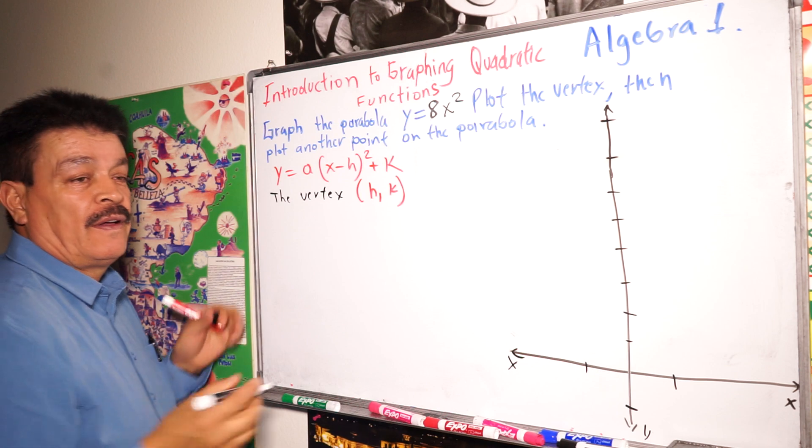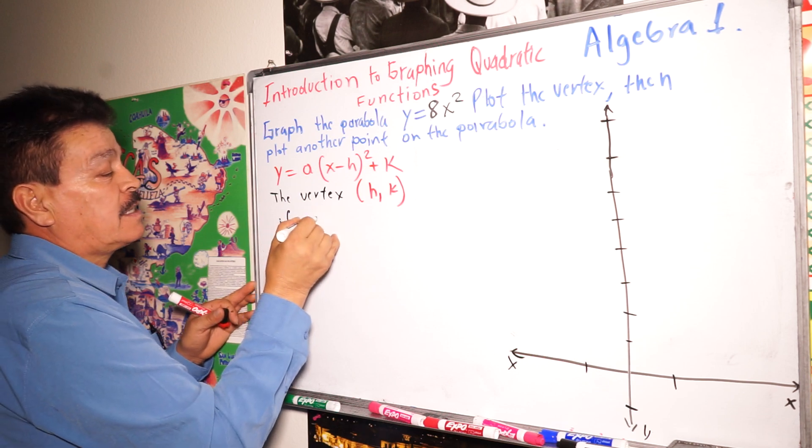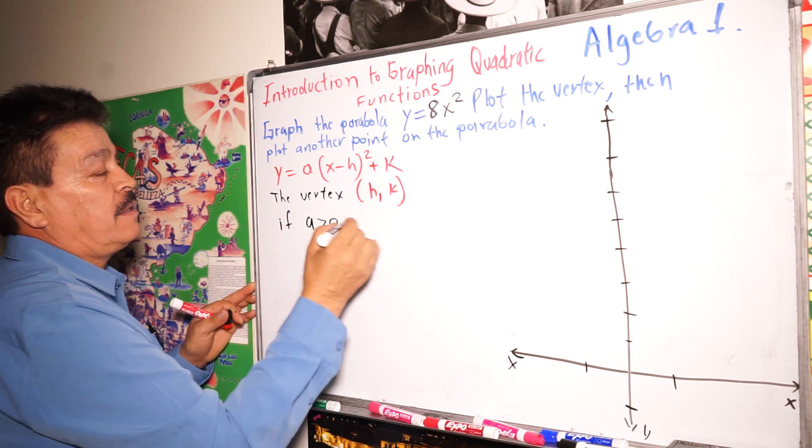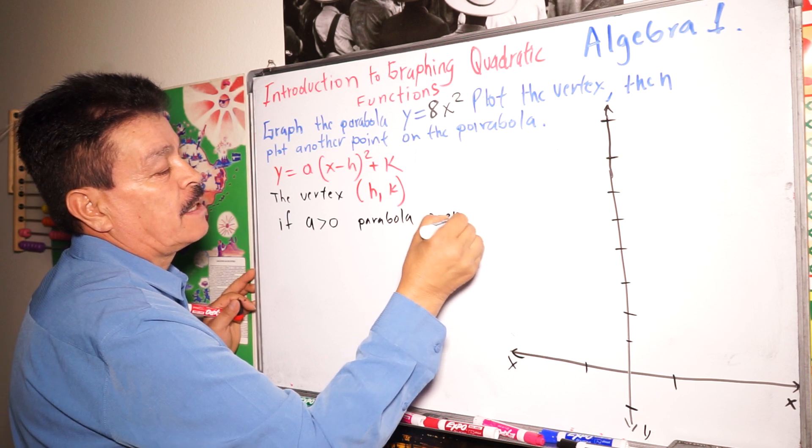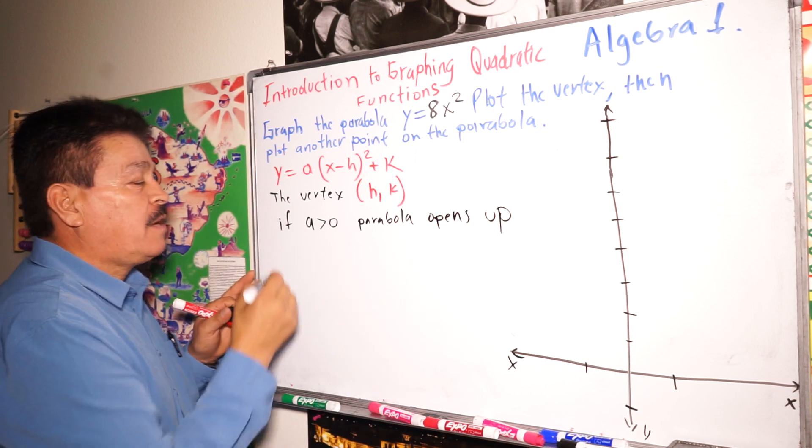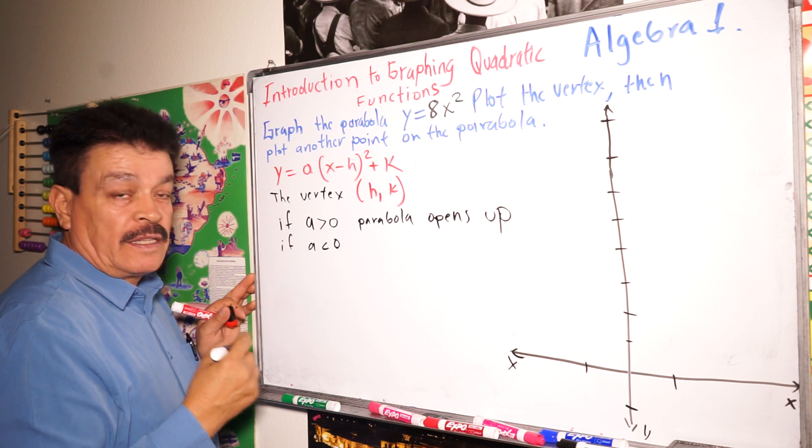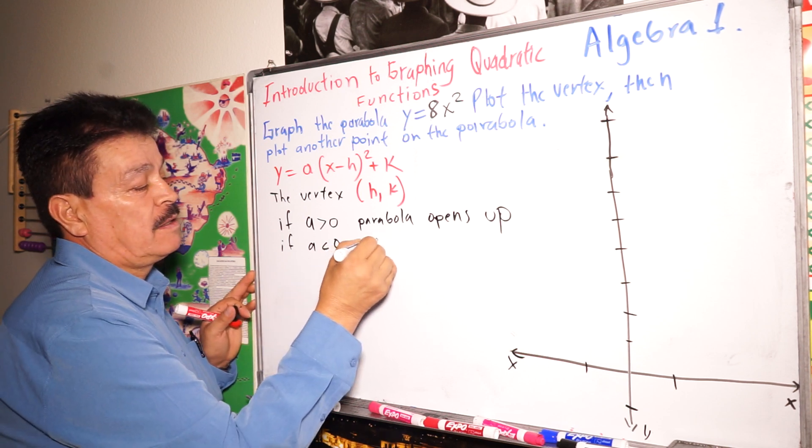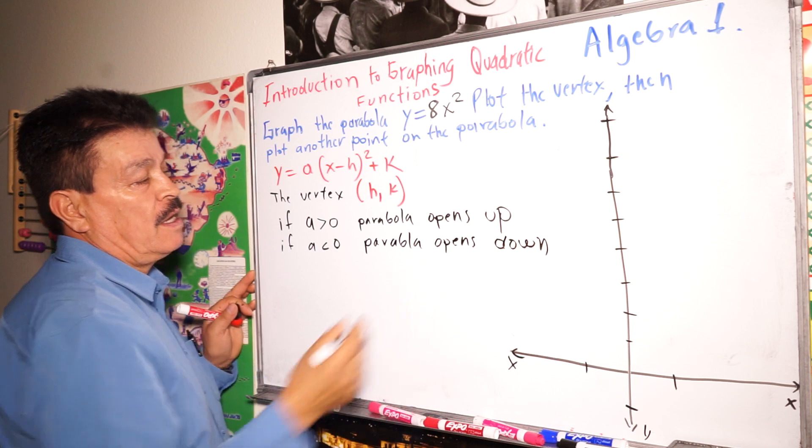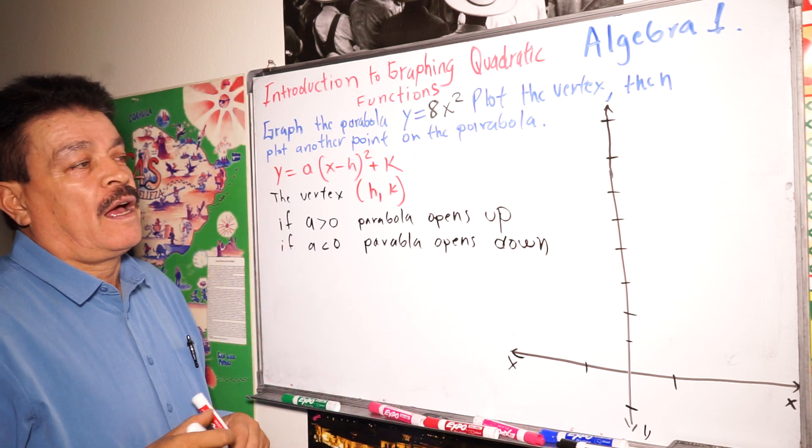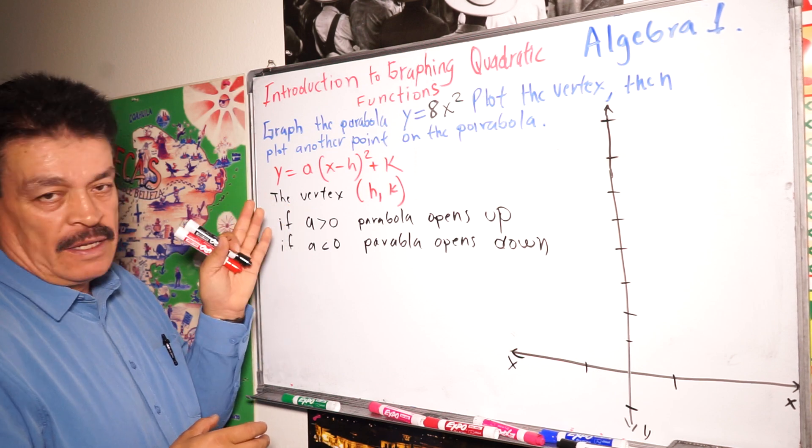If a is greater than zero, then the parabola opens up. If a is less than zero, then the parabola opens down.